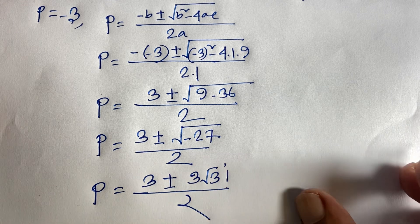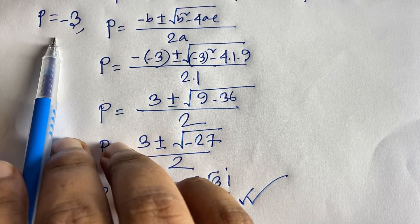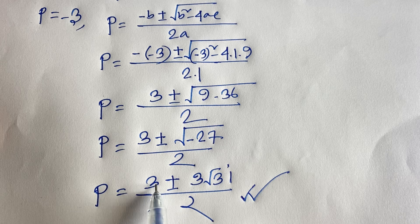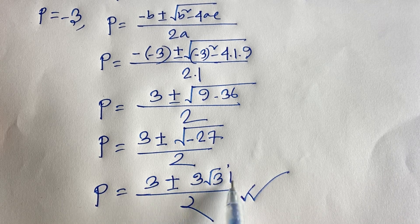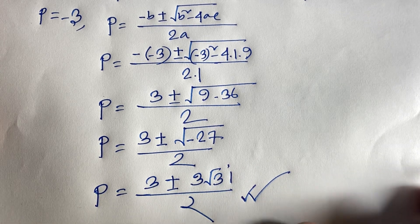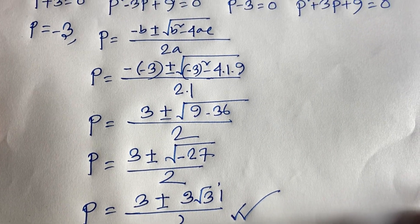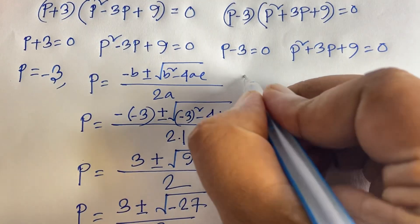So our final answers are: p = 3, p = −3, p = (3 ± 3√3 · i) / 2, and p = (−3 ± 3√3 · i) / 2.